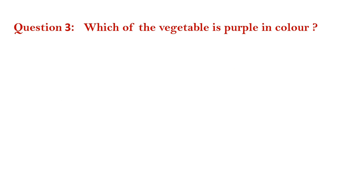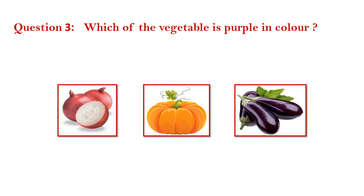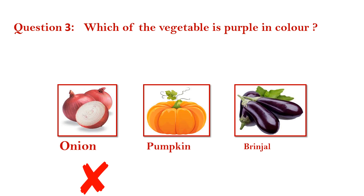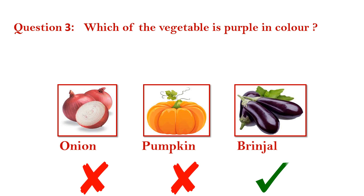Question number 3. Which vegetable is purple in color? Onion — wrong. Pumpkin — wrong. Brinjal — right. Answer is brinjal.